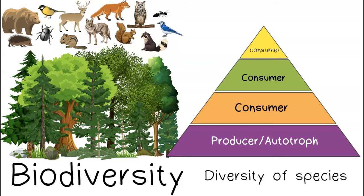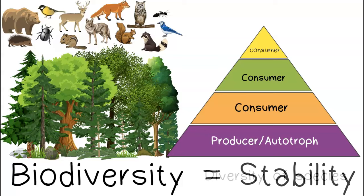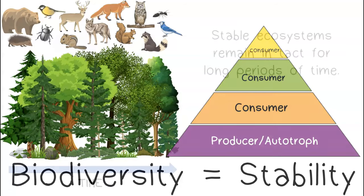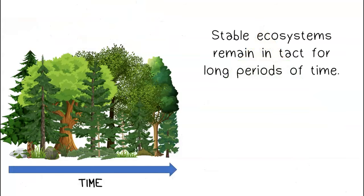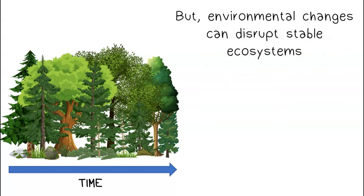Ecosystems that have lots of biodiversity are more stable. Stable ecosystems remain intact for long periods of time, but environmental changes can disrupt stable ecosystems.